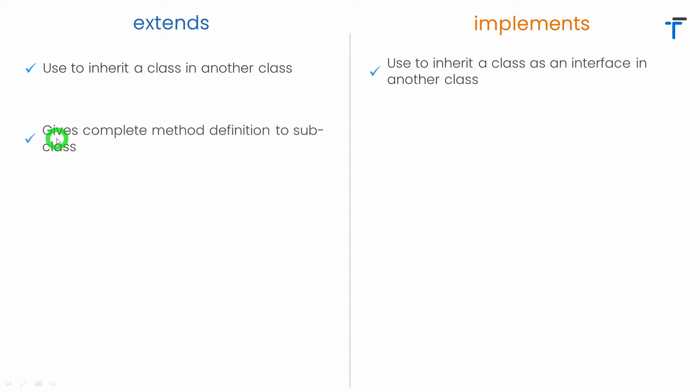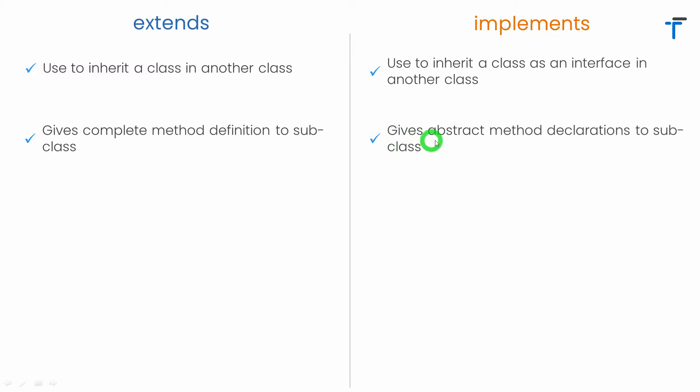Using extends, it gives a complete method definition to the subclass. Whenever we use extends to create the super class and subclass relation, all the methods of the super class along with the complete definition get inherited inside the subclass. While when we use the implements keyword, it only passes abstract method declarations to the subclass — the complete method definition of the interface does not get inside the implementing class.